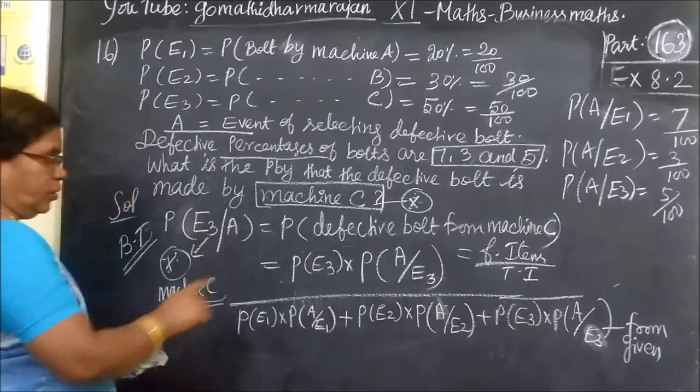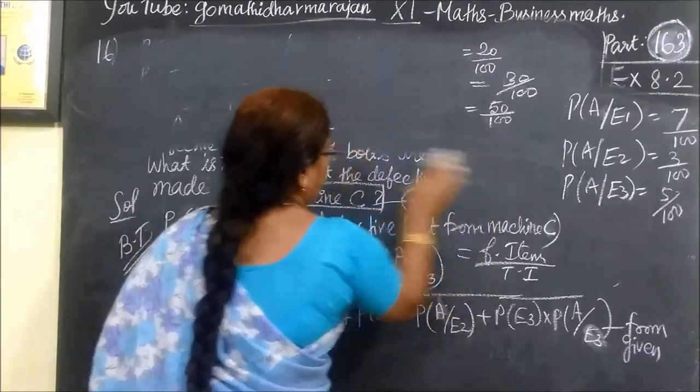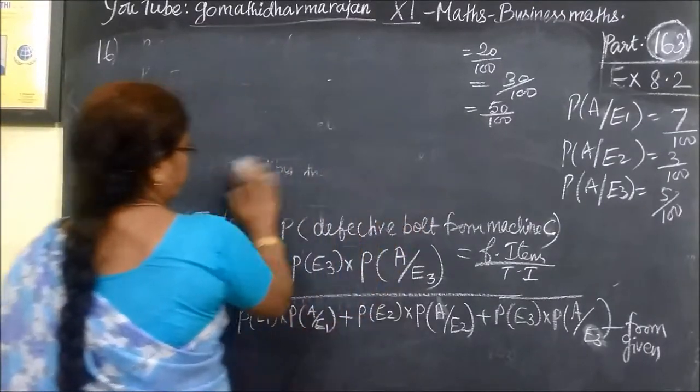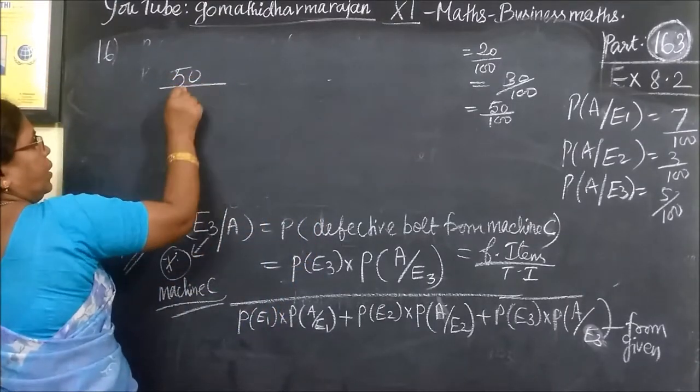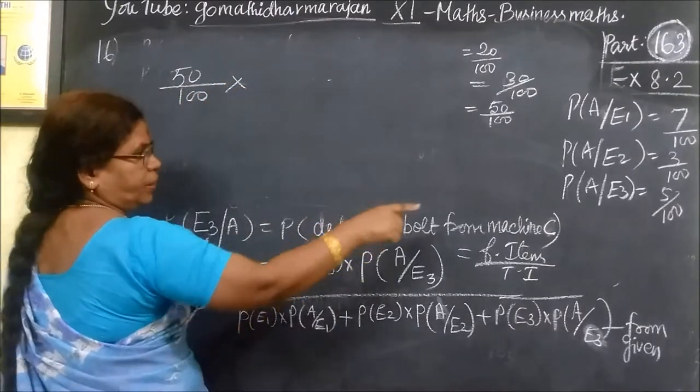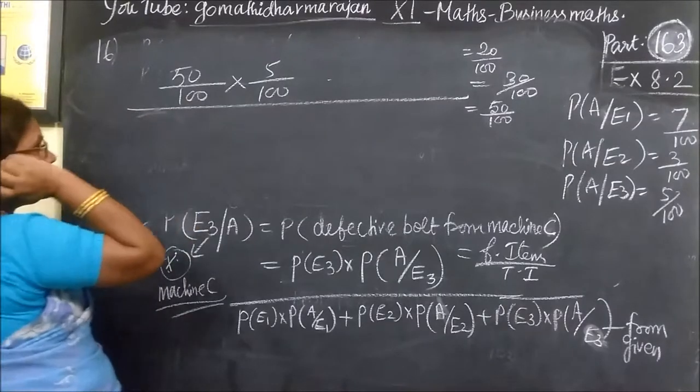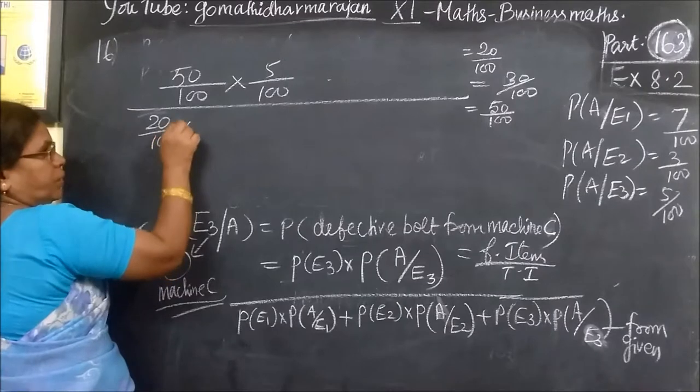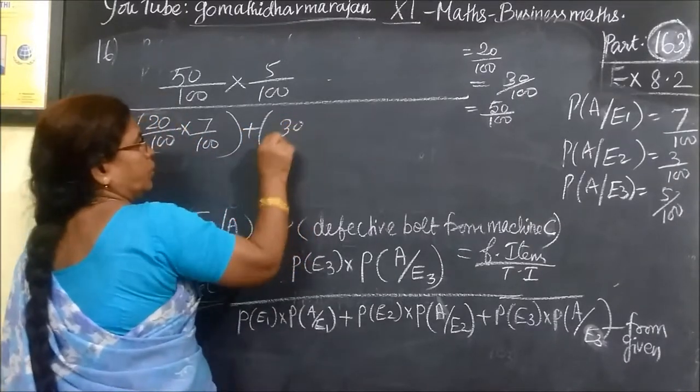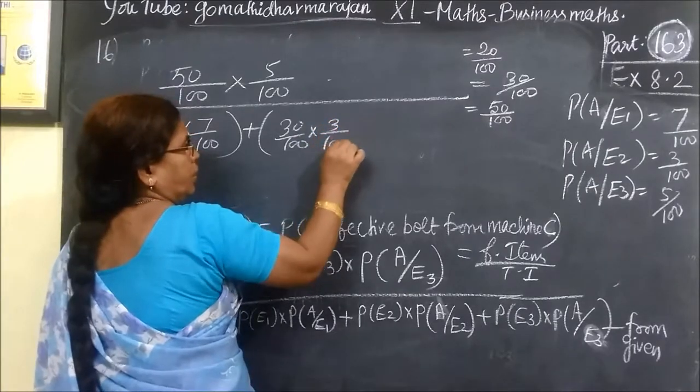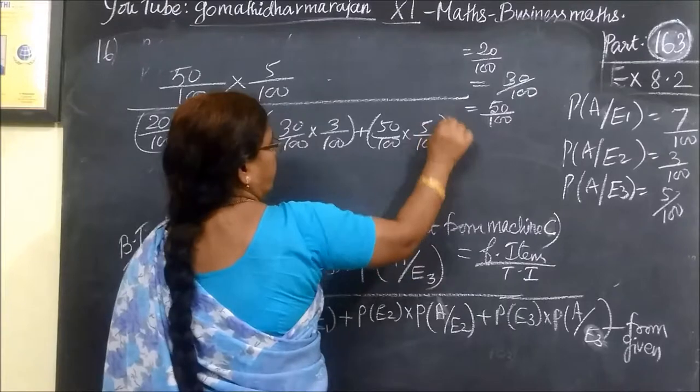P of E3, 50 by 100, into P of A by E3, 5 by 100, then the whole by P of E1, 20 by 100, then A by E1, 7 by 100, then plus E2, 30 by 100, then 3 by 100, then E3, 50 by 100, then 5 by 100.